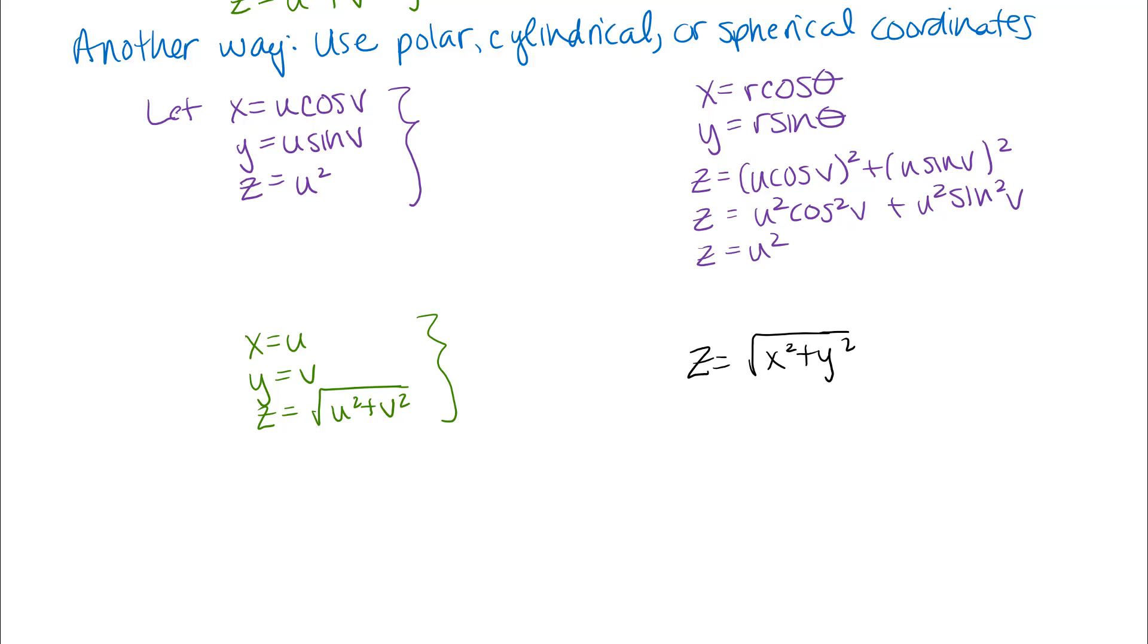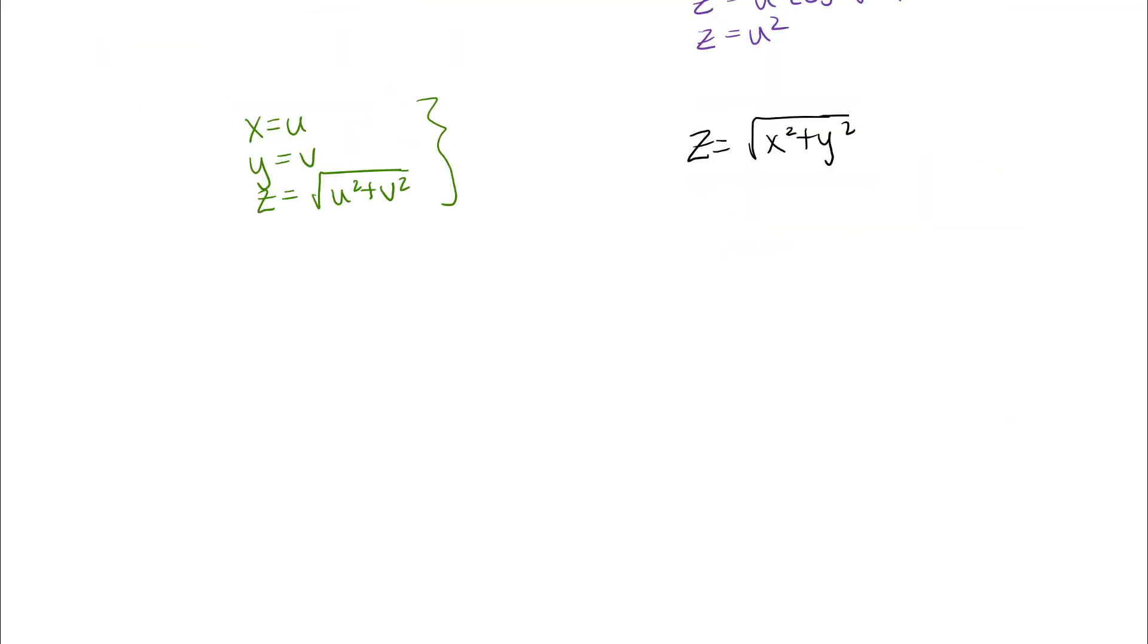The only difficulty with that parameterization is that at the step when I go to take some partial derivatives of x, y or z and in particular z with respect to u and v, I run into a little bit of trouble with those partial derivatives. And so this is one where perhaps a different parameterization and in particular one using polar coordinates is a little bit more helpful. So if instead I let x be u cosine v again and y be u sine v and then I can find an equation for z in terms of u and v.